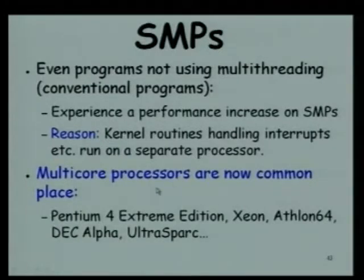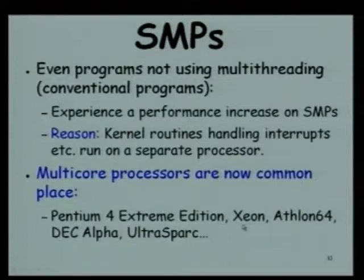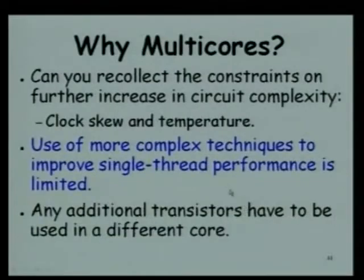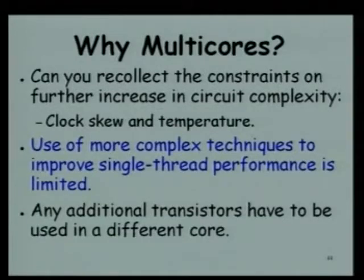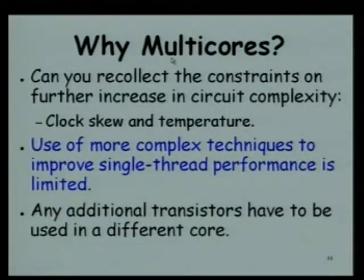Almost every processor you find in the market is multicore - Pentium 4, Xeon, Athlon, Decalpha, UltraSpark, etc. Earlier only servers like Xeon and Opteron were multiprocessors; now even on the desktop you have multiprocessors. Why did vendors make multiple cores rather than making a single processor fast? Why not make the single processor faster? Why go for multicore processors?